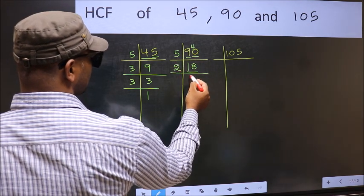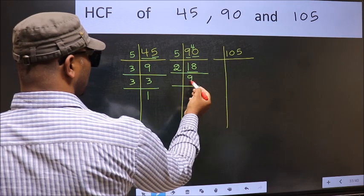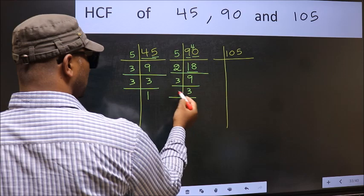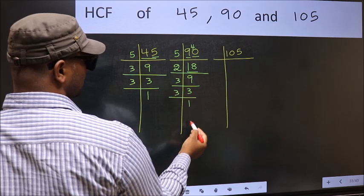Now 18 is 2 nines, 18. 9 is 3 threes is 9. Now 3 is a prime number, so 3 ones 3.